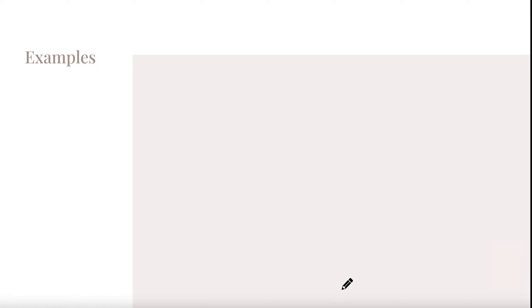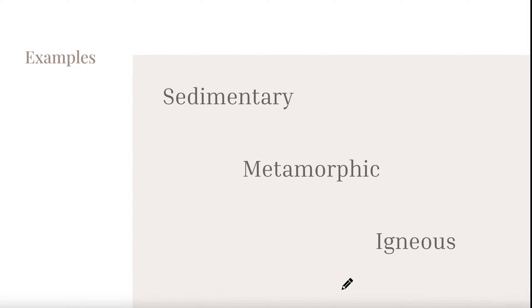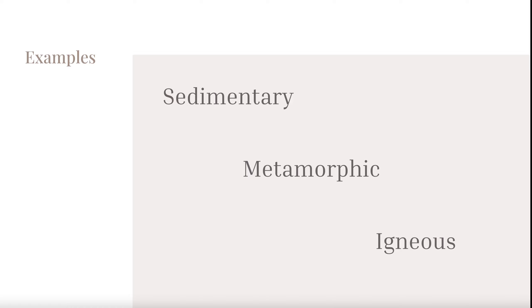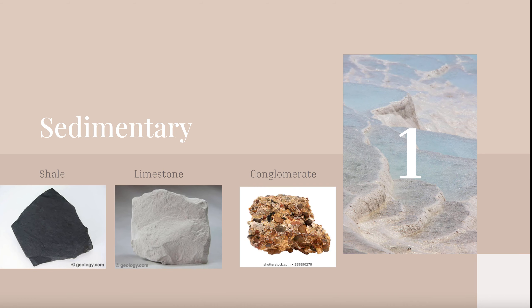On the right-hand side of your notes you will see where it says 'examples.' There are three types of rocks, just like the video said: sedimentary, metamorphic, and igneous. We're going to fill in a few examples — many of these should sound familiar from our rock scavenger hunt. Some good examples of sedimentary rocks are shale, limestone, and conglomerate.